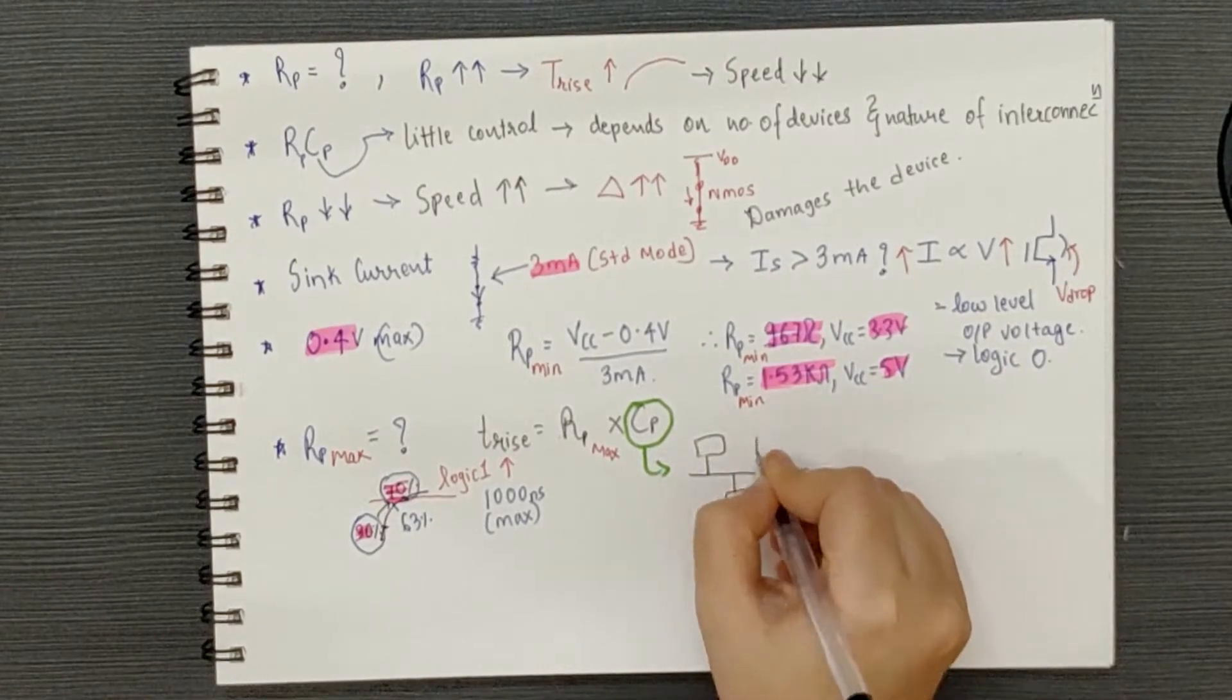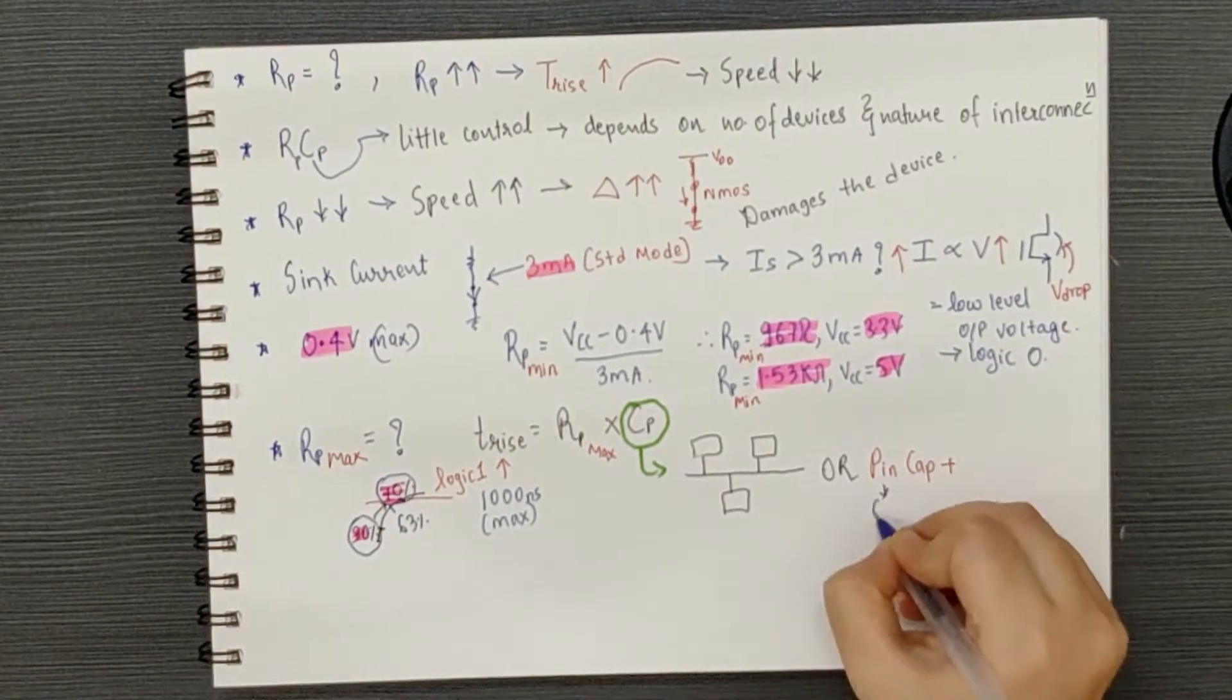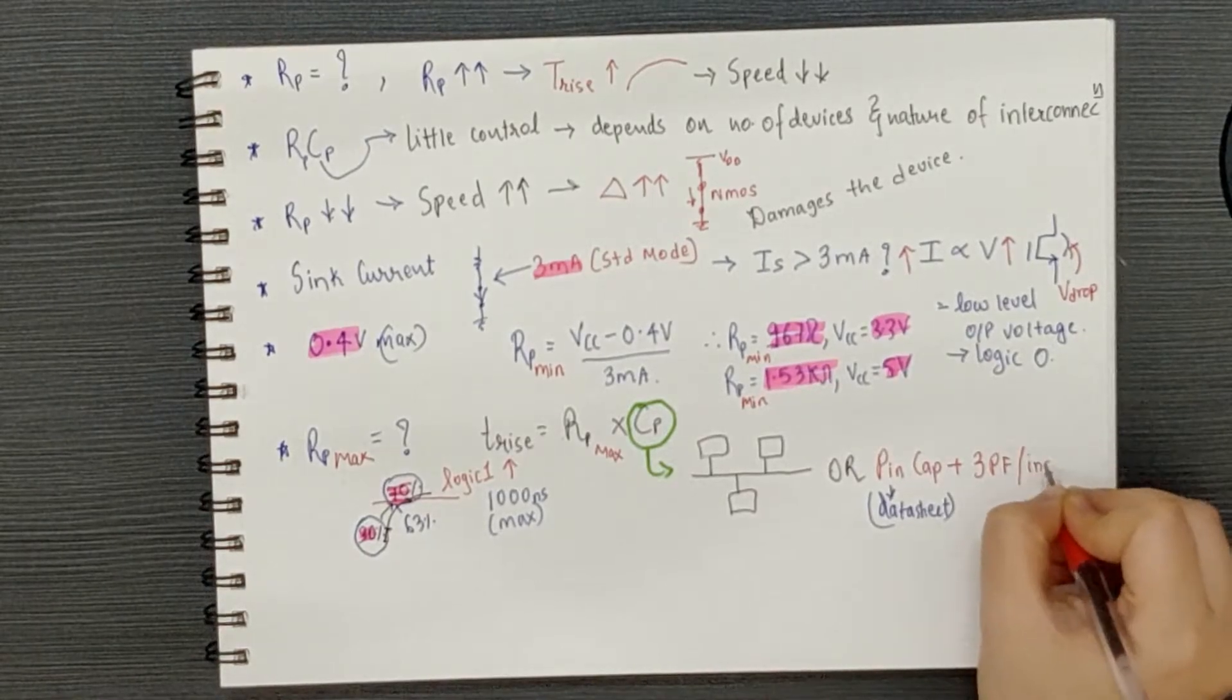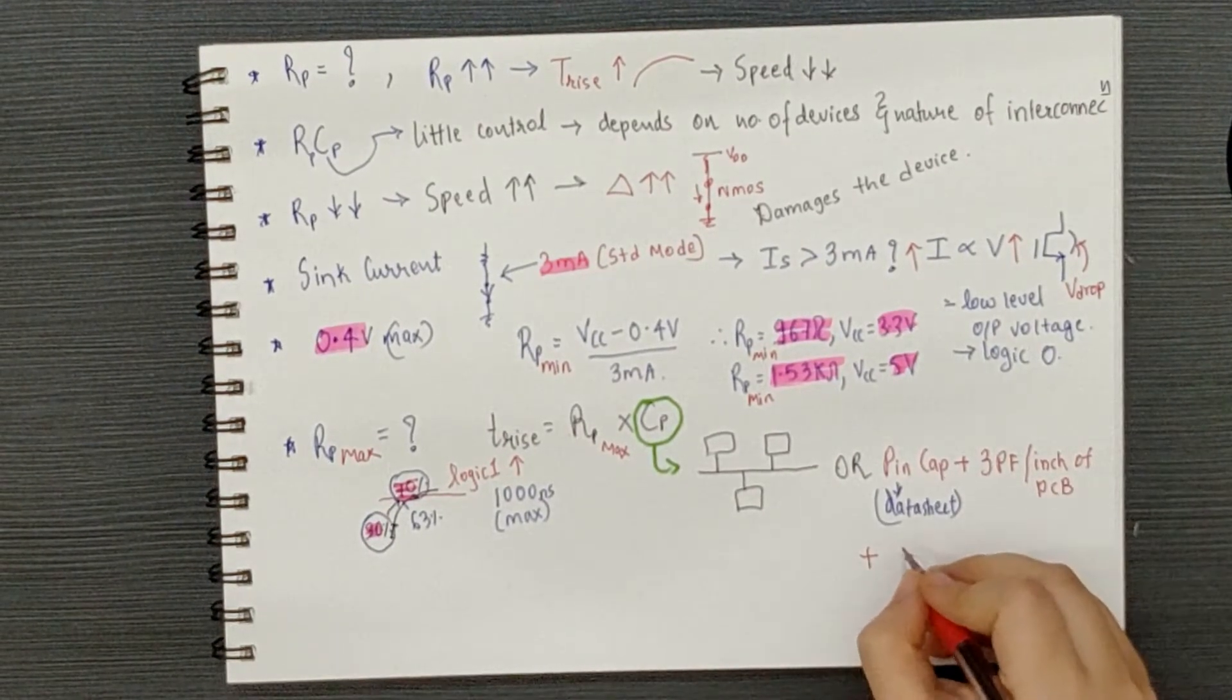The value of capacitance can be measured by assembling the entire system and if this isn't possible, then a rough estimate can be made by finding the pin capacitance for each device. This can be found in the datasheet.